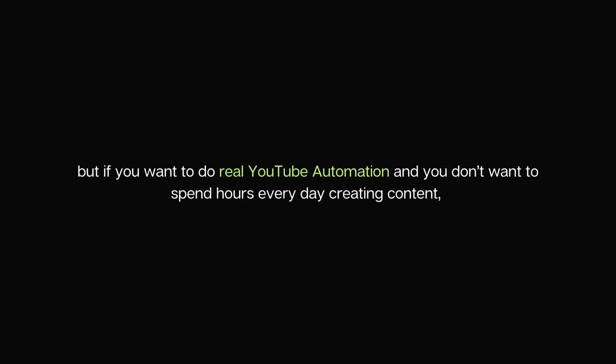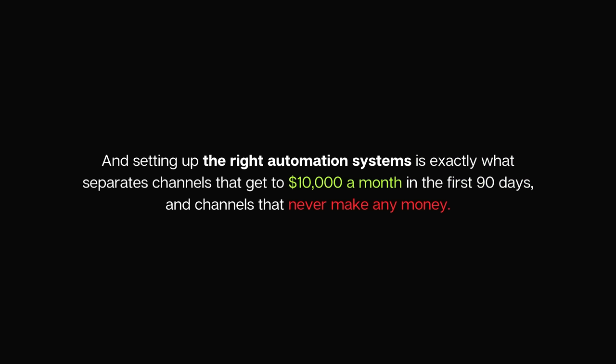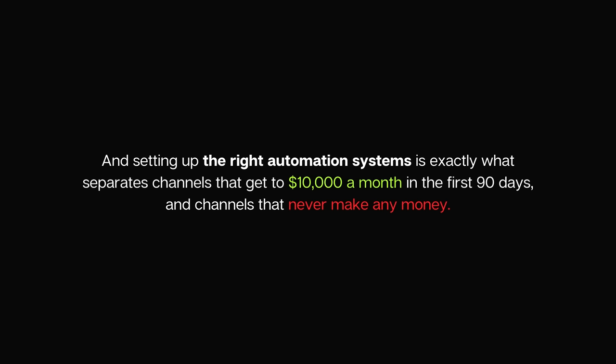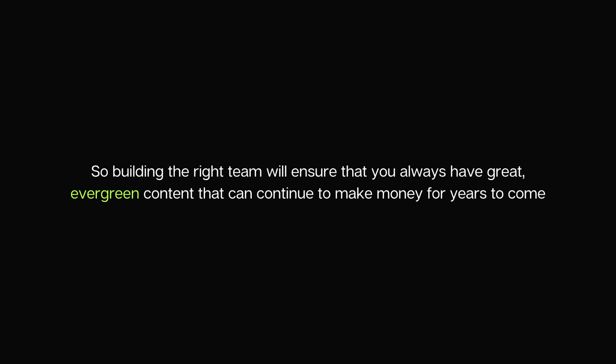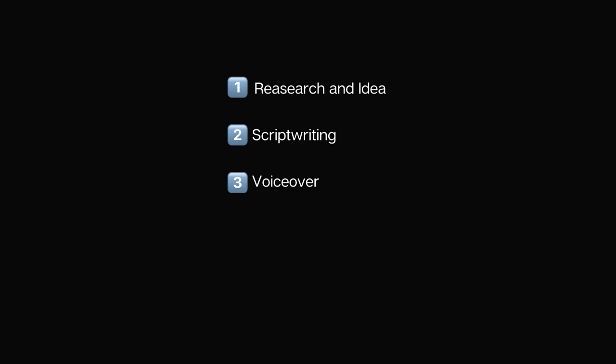The next step is actually creating your faceless YouTube videos. If you want to do faceless YouTube, you can mostly create content yourself. But if you want real YouTube automation and don't want to spend hours every day creating content, you can build your own team and create automation systems. Setting up the right automation systems is exactly what separates channels that get to $10,000 a month in the first 90 days from channels that never make any money. There are five content elements: number one is research and idea, number two is script writing, number three is voiceover, number four is video editing, and number five is a video thumbnail.